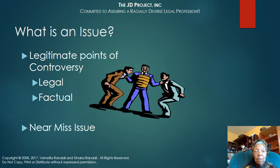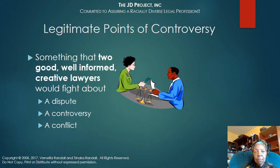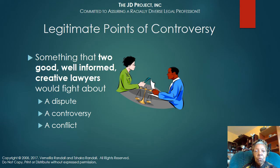So one of the main things people always ask is: what is an issue? In the context of the law, there are two kinds of main issues, especially on exams. There are legitimate points of controversy, which can be either legal or factual, and there are near miss issues. A legitimate point of controversy is something that two good, well-informed, creative lawyers would fight about. It's a dispute, a controversy, a conflict.